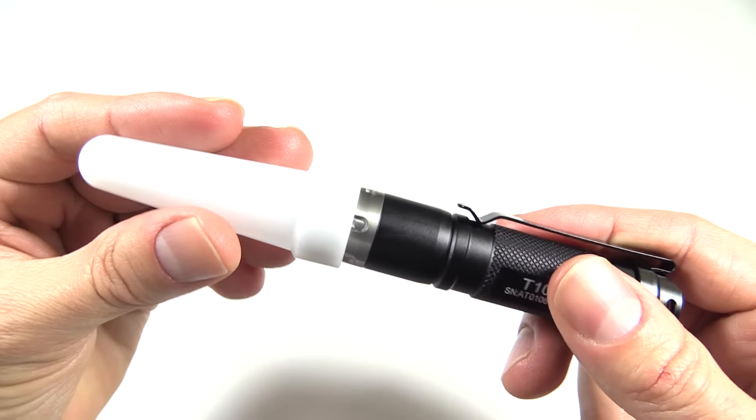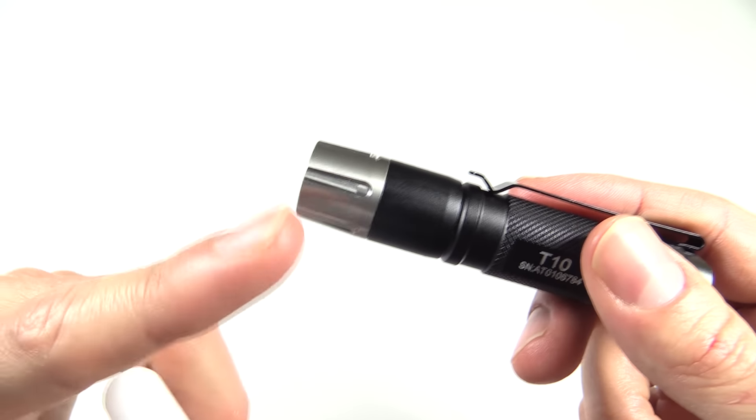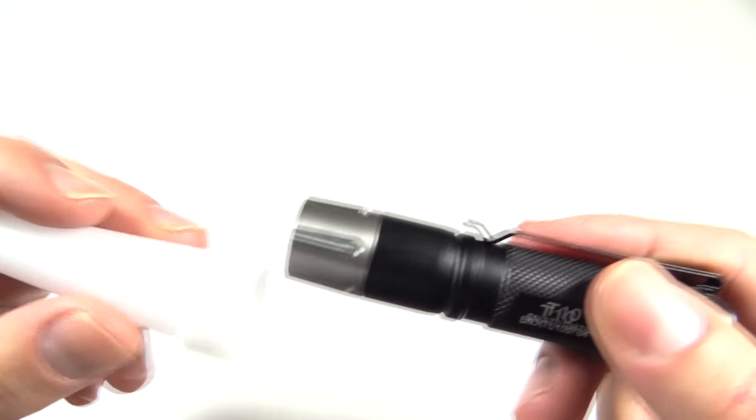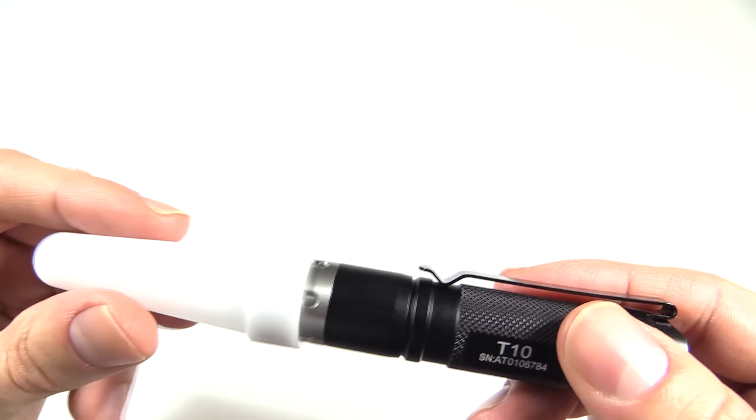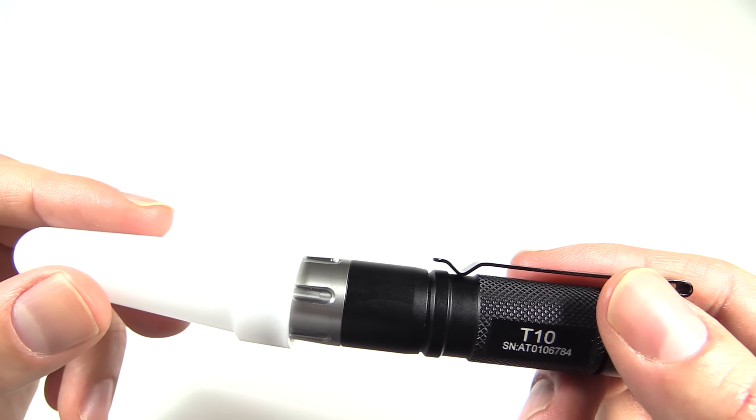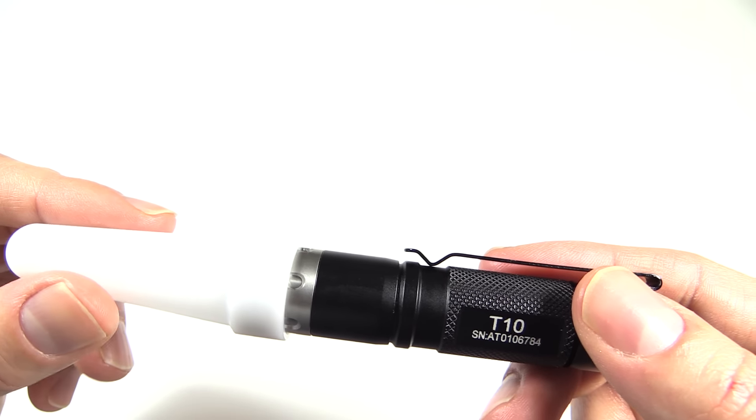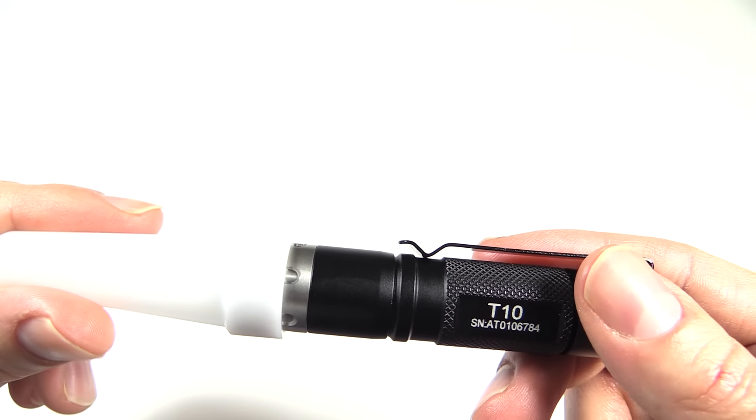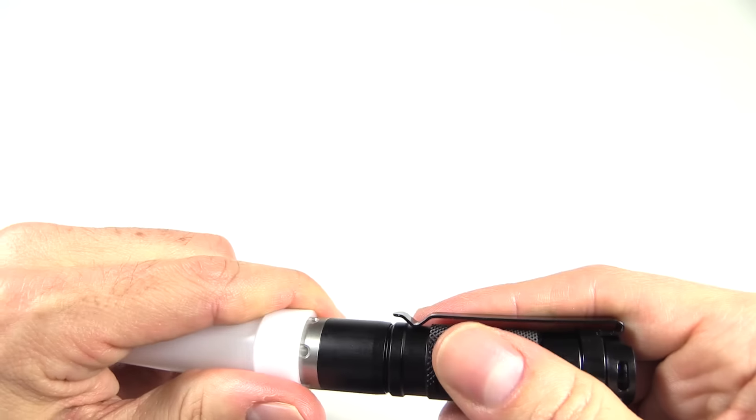It does also have the diffuser here, which fits on here. And I think one of the reasons they may have left this unpainted or unanodized is because repeated on and off, it may or may not chip. I suppose it could chip some of the anodizing, even though it's pretty tough.